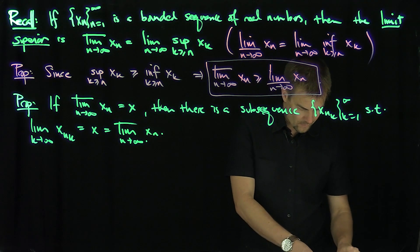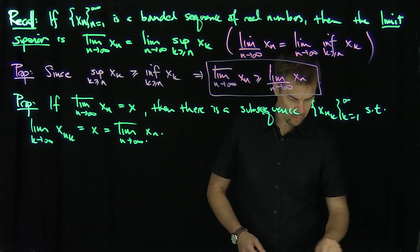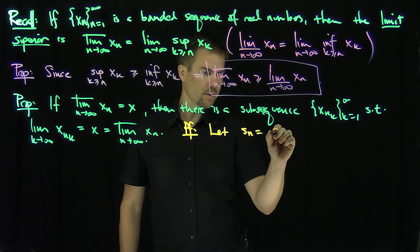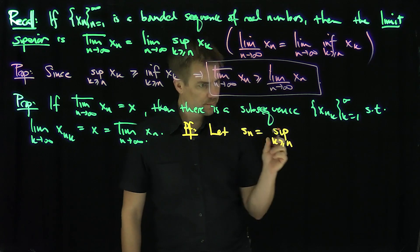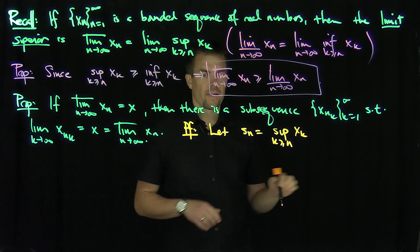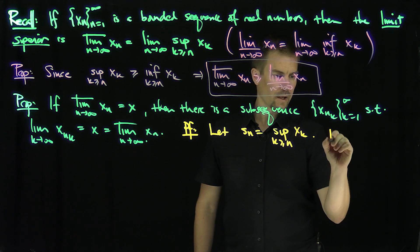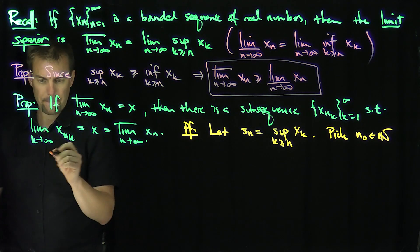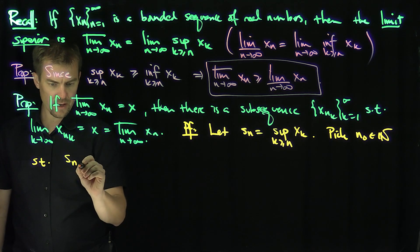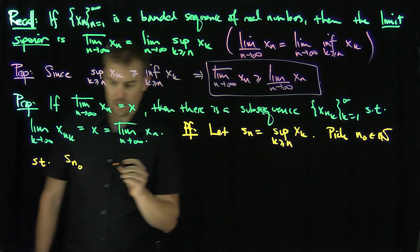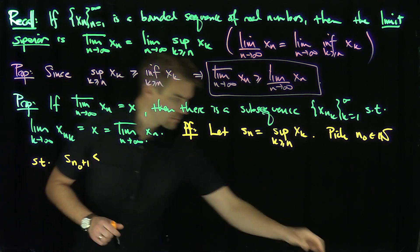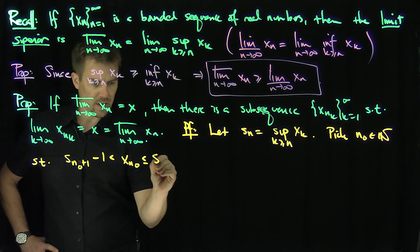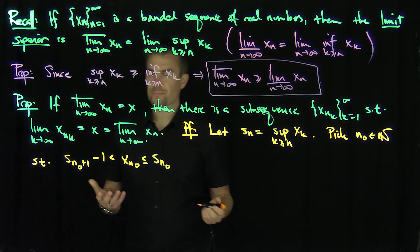Proof: let s_n be the supremum over k greater than or equal to n of x_k. Pick an n_0 such that s_{n_0} minus 1 is less than x_{n_0}, which is less than or equal to s_{n_0}. In other words, I can do this by supremum approximation: if I couldn't find such an x, then s_{n_0} minus 1 would be the supremum, not s_{n_0}. So I can always find this.